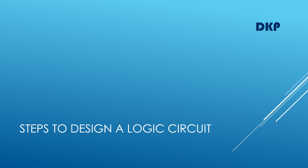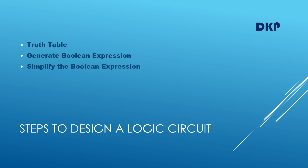You have to follow four steps to design a logic circuit. The first step is write the truth table, then generate the Boolean expression, then simplify the Boolean expression using K-map, and then draw the circuit diagram or the logic diagram. These are the four steps to follow.